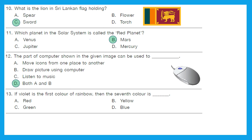We define the colors of the rainbow using VIBGYOR: V — Violet (1st), I — Indigo (2nd), B — Blue (3rd), G — Green (4th), Y — Yellow (5th), O — Orange (6th), R — Red (7th). So the seventh color of the rainbow is Red.